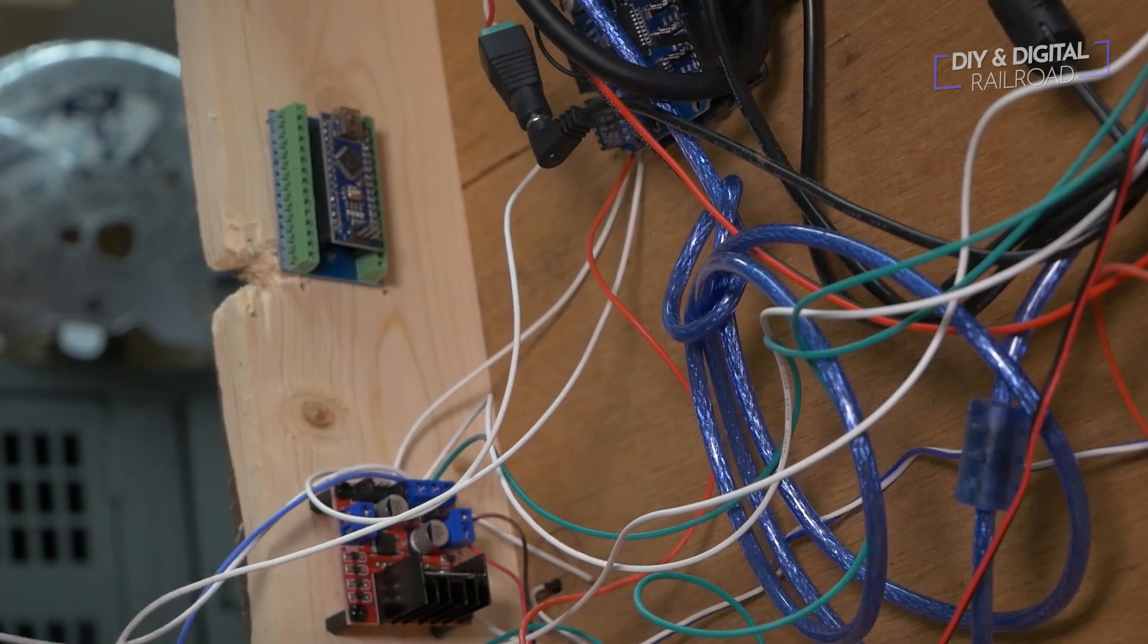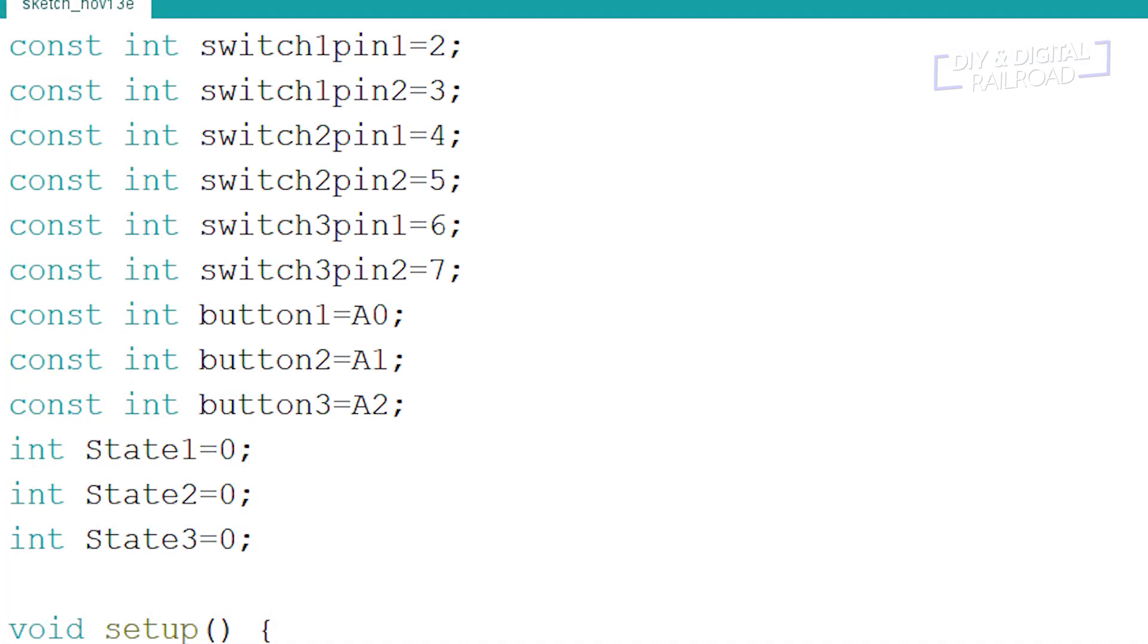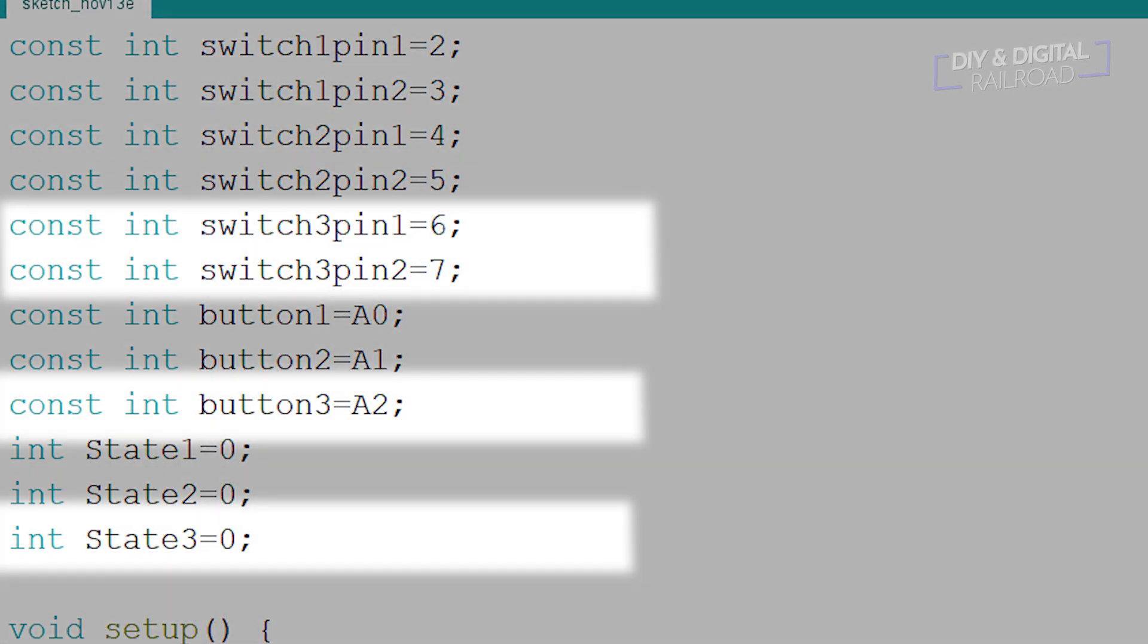Before we begin wiring let's take a look at the adjustments we'll need to do to our code to add a third turnout to it. Since I've gone through the original code in its entirety in the prototype build video, I'm just going to go through the changes that you will need to make. If you need the original code or just want the three switch code I'll link those to be downloaded in the description below. First let's take a look at the changes we need to make to our integer declarations. For the constant integers you'll need to add switch3pin1 = 6 and switch3pin2 = 7. You'll also need to add button3 = A2. For regular integers you'll want to add state3 = 0.